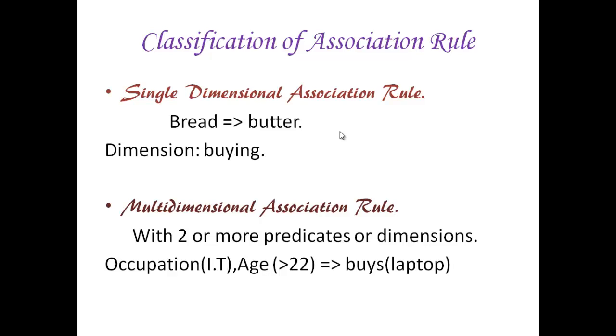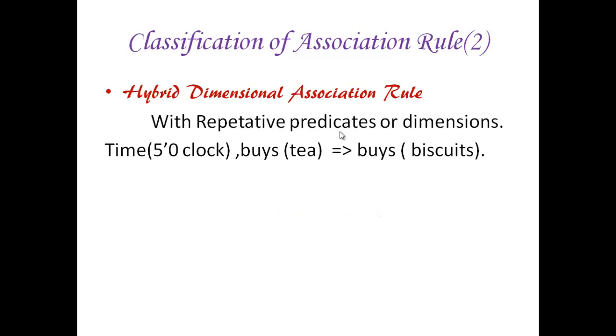In multi-dimensional association rule, the predicates or dimensions should not be repeated. But in hybrid dimensional association rule, predicates or dimensions can be repeated. Consider this example: if a person at 5 o'clock gets tea, he is likely to get biscuit also. Here, the dimension buy is repeated. So in hybrid dimensional rule, the repetitions are allowed.